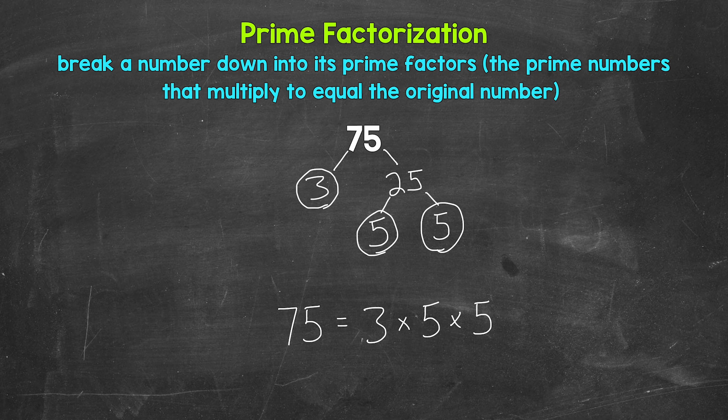If we have the correct prime numbers, they will multiply to equal our original number. So let's check. Three times five is 15 times five is 75. So we are correct here.